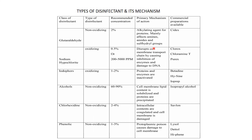Sodium hypochlorite is an oxidizing disinfectant; 0.5% concentration can be used. It disrupts the cell membrane and damages DNA. Commercial examples include Clorox and Purex.